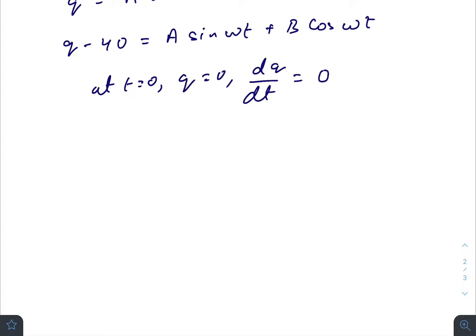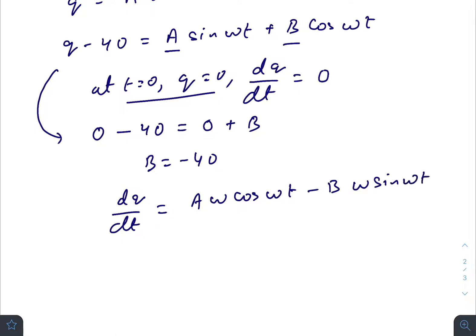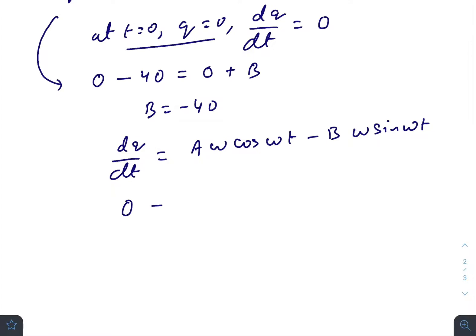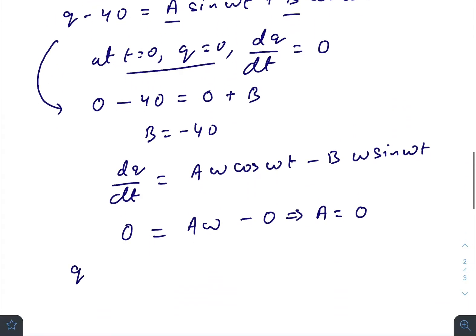Now use these boundary conditions to find A and B. Using the first one, we get 0 equals 0 plus B, so B equals minus 40. Using the second one, if you differentiate both sides, you get dq/dt equals A ω cos(ωt) minus B ω sin(ωt). At t equals zero, dq/dt is zero, which gives A ω minus 0. Since ω is not equal to zero, A will be zero.